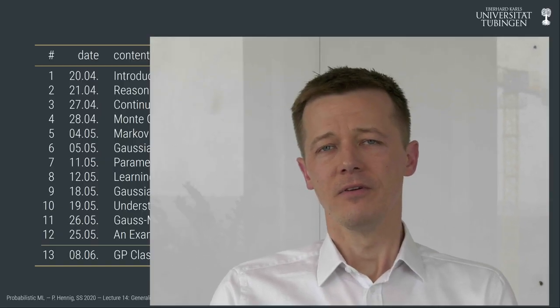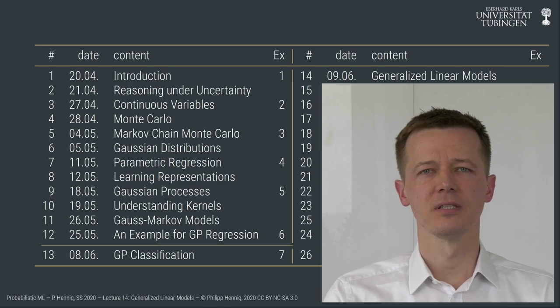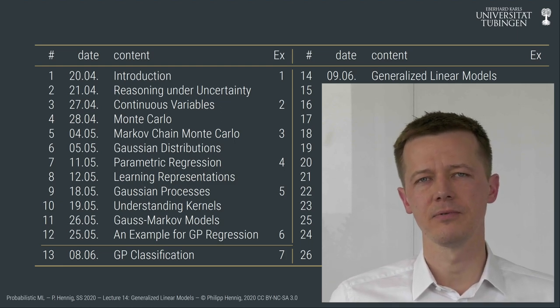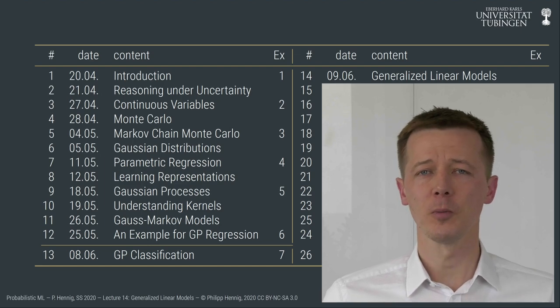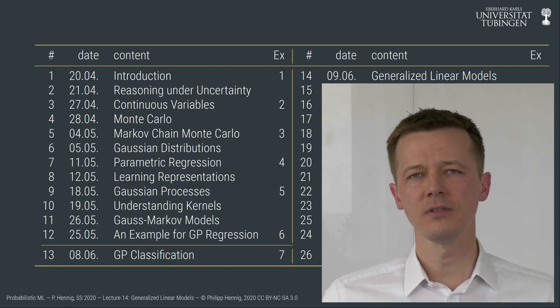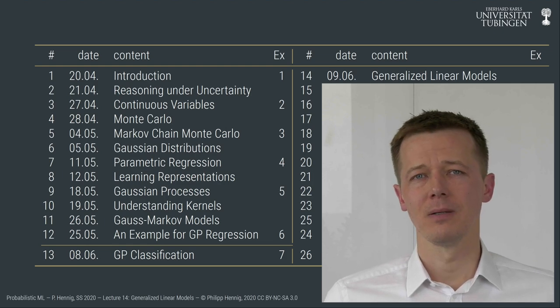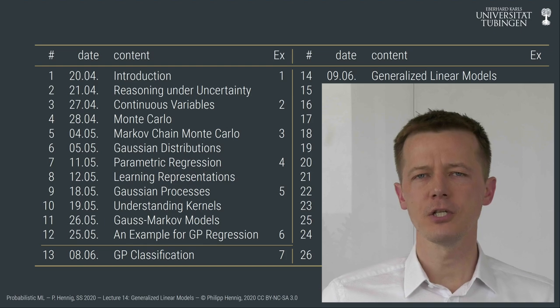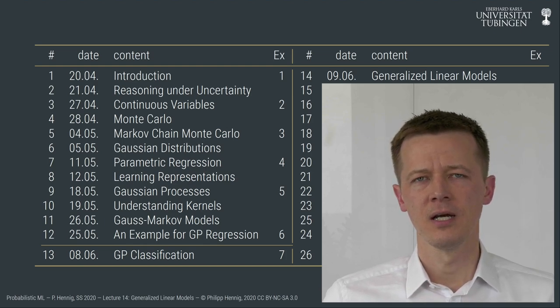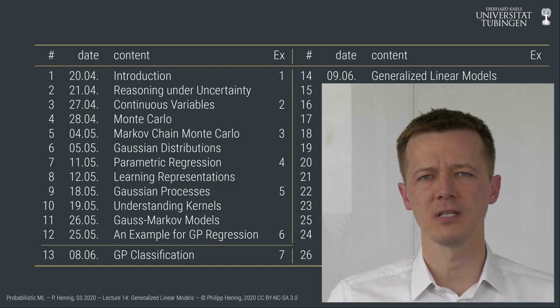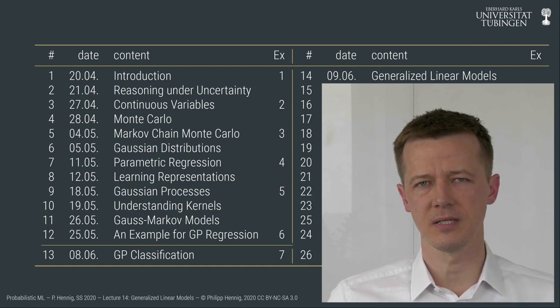Hello and welcome to probabilistic machine learning lecture number 14. We've already spent quite some time in this course developing a powerful probabilistic framework for one very specific type of machine learning problem: supervised regression, where we learn a function mapping from the input domain to the real line. In lecture 13, we encountered a variation called classification, where observations are not real-valued but categorical — individual classes, either binary or multiple categories at different input locations.